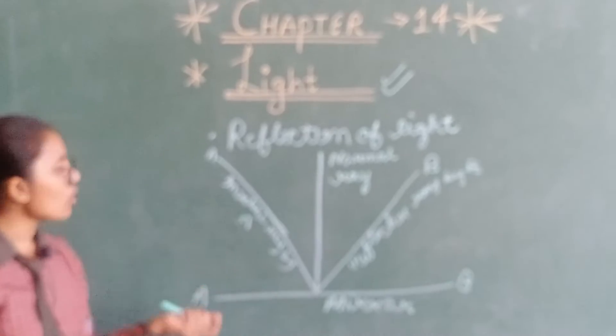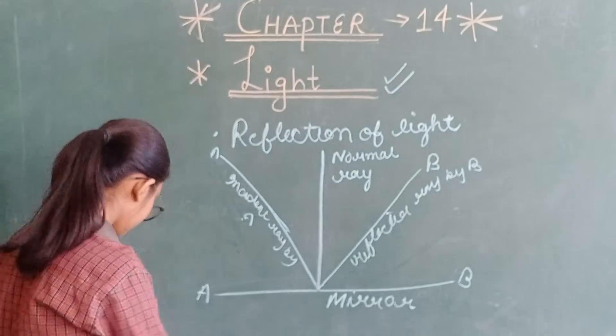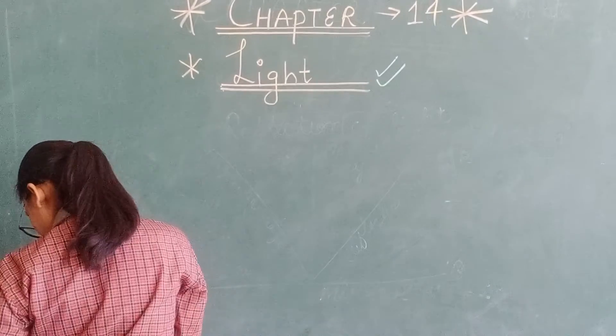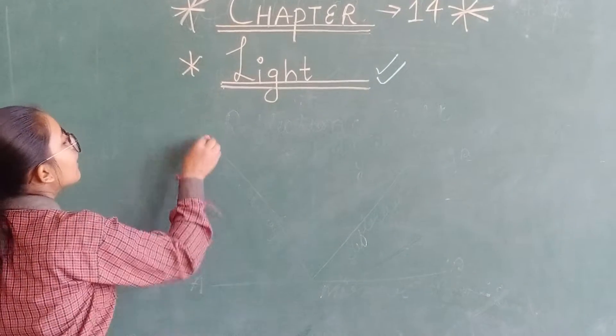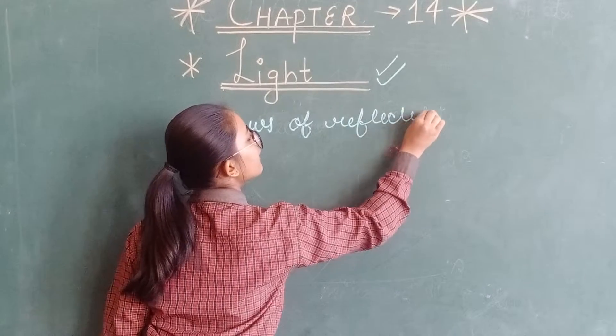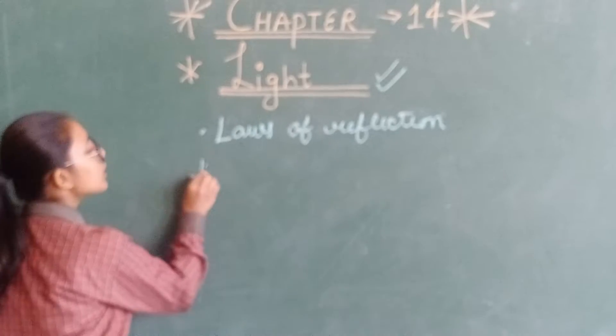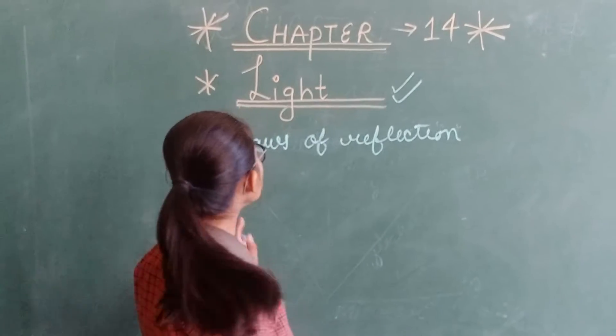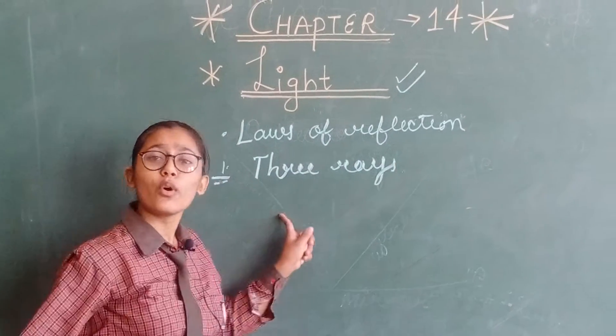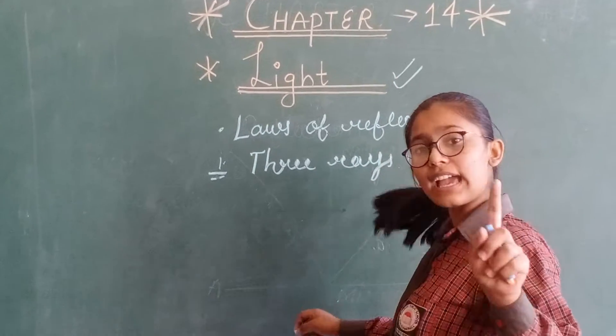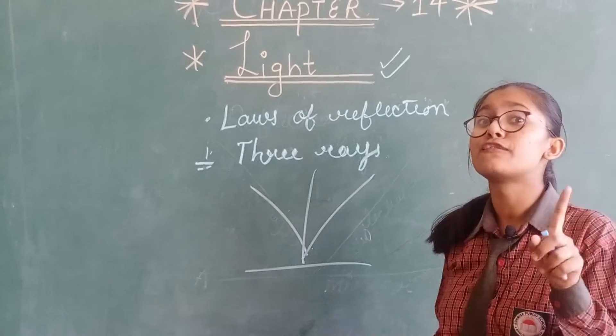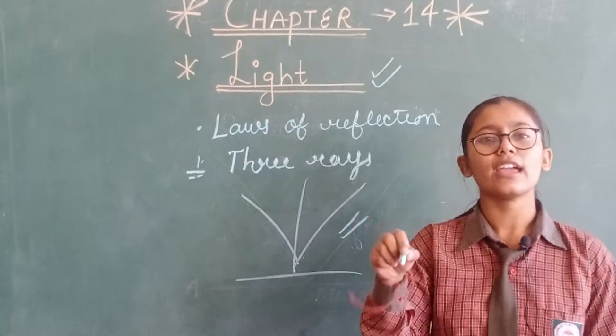And there is a law of reflection. There are two laws of reflection as you have studied in your earlier classes. So let's see, laws of reflection. First law is that all three rays will lie on the same plane. As I have told you that three rays are on the surface of the mirror, and this is the first law that all these three rays will lie on the same plane.